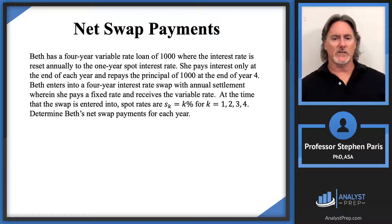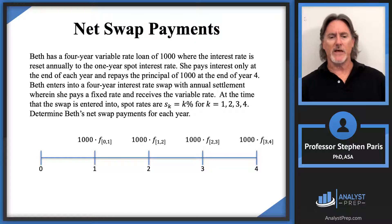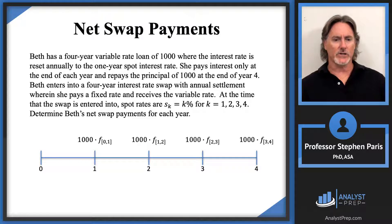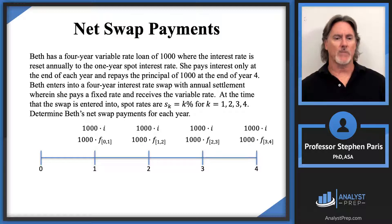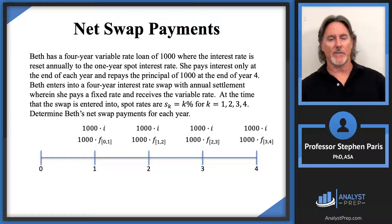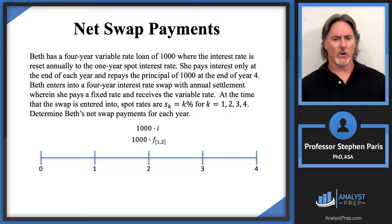An interest rate swap involves a timeline where you have interest payments based off of these forward rates. These forward rates will not be equal to each other, so there are all these different forward rates, and I want to swap that for interest payments based off of a level interest rate of I. I'm actually asked to find Beth's net swap payments for each year.